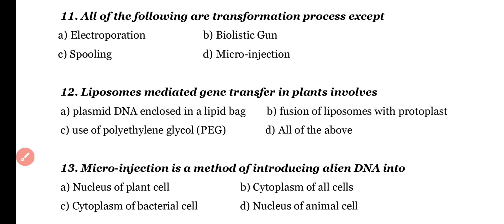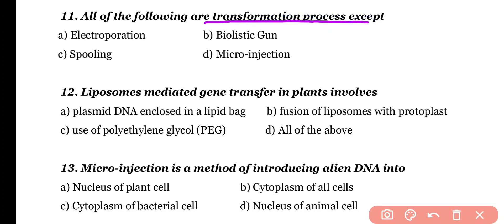Question 11. All of the following are transformation processes except: electroporation, biolistic gun, spooling, or micro-injection. Correct answer is option C. Spooling is an online computer tool and is not part of the transformation process. Biolistic gun, micro-injection, and electroporation are transformation processes.